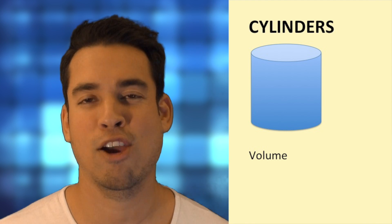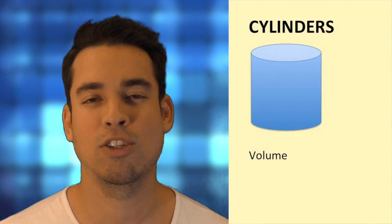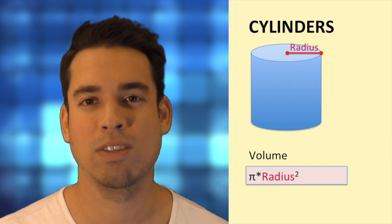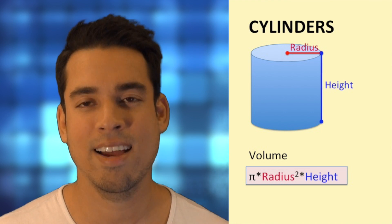So you might be asked to calculate the volume of a cylinder on the ACT. The volume of the cylinder is simply the area of the circles on top and bottom, so pi r squared, times the height of the cylinder.